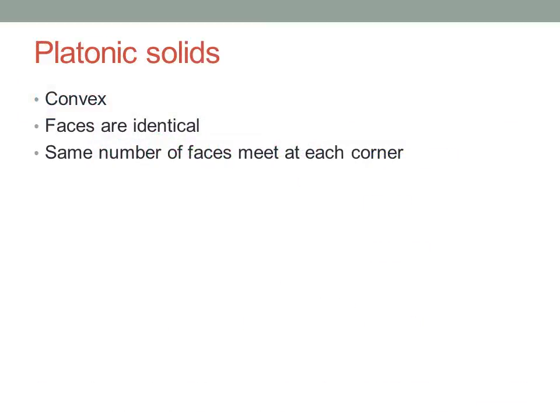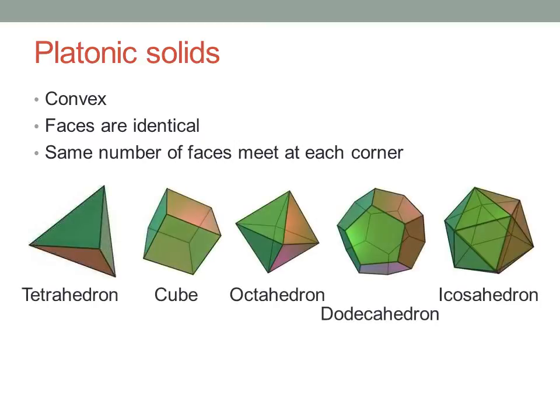A platonic solid, named after the ancient Greek philosopher Plato, is a convex polyhedron whose faces are all exactly the same shape and size, and with the same number of faces meeting at every vertex. Although it may seem like you could make any number of different shaped solids meeting these criteria, in fact, there are only five of them.